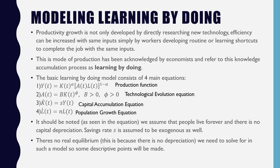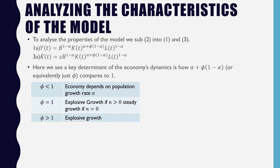To analyze the properties of the model, we substitute equation 2 into equation 3 and get two resulting equations. A key determinant of the economy's dynamics depends on how the coefficient alpha plus phi times (1 minus alpha) — or equivalently just phi — compares to 1.